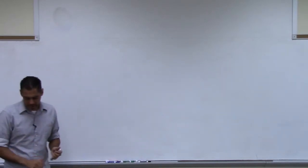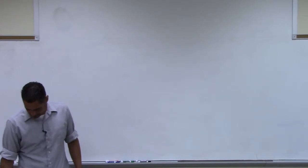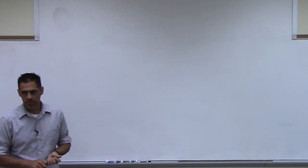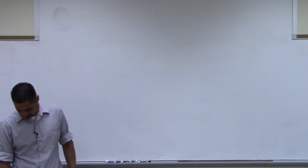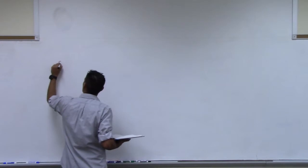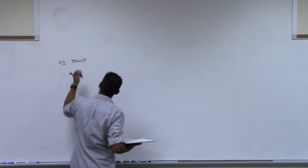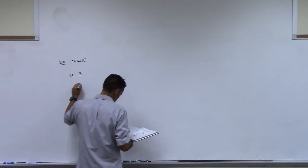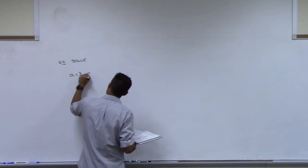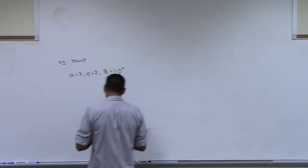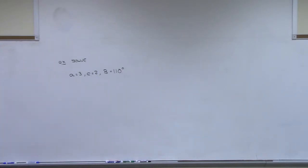Law of cosines is what we ended with last time. Should we do one more example? Let's try one of these. I'm going to present this problem in a slightly different way. As an example, we want to solve this triangle. Let's go with little a is 3, little c is 2, and capital B is 110 degrees. That's the way this problem appears in the book — I just picked one out of the book. You're supposed to solve the triangle.